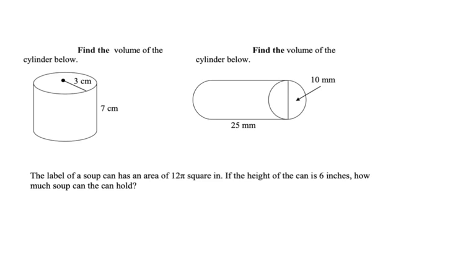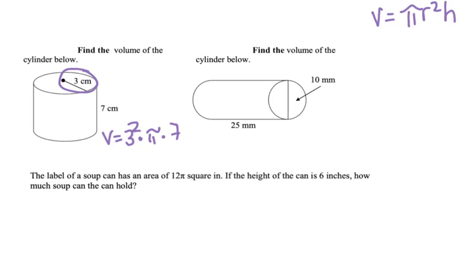Let's do some cylinder practice. Remember, the formula for the volume of a cylinder is pi r squared h. If we look here in our first example, we do have a radius, which is going halfway. So I'm going to do volume equals 3 squared times pi times 7. We get volume equals 63 pi. We multiply that together, and the volume is 197.9 centimeters cubed.